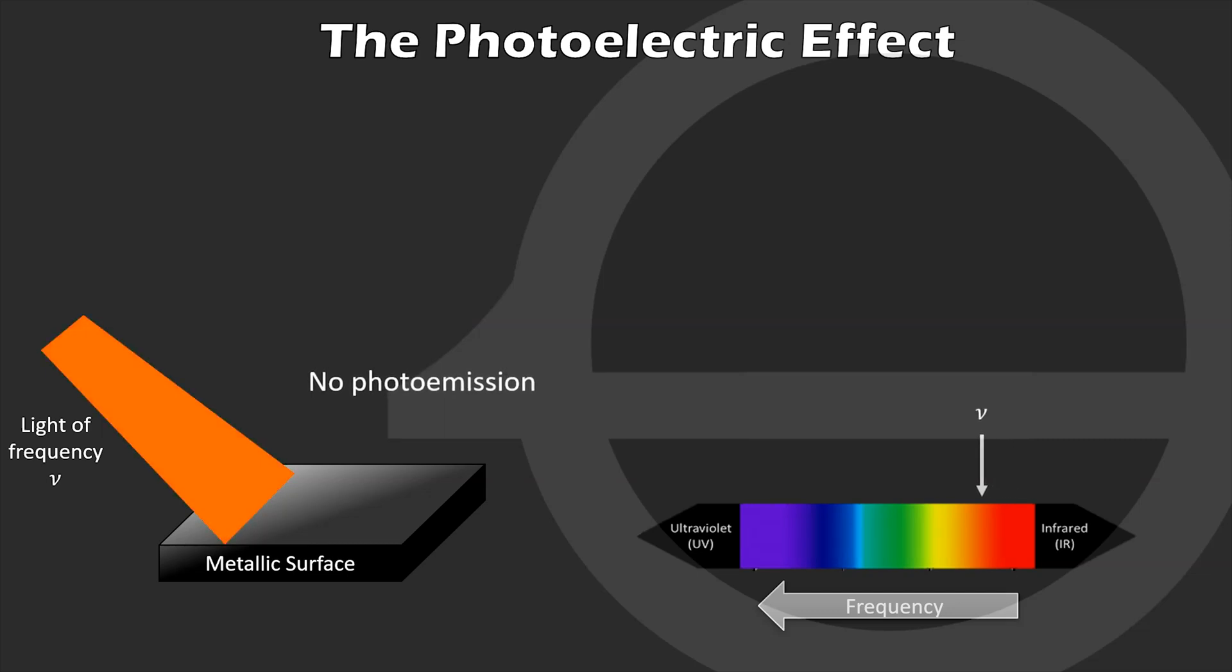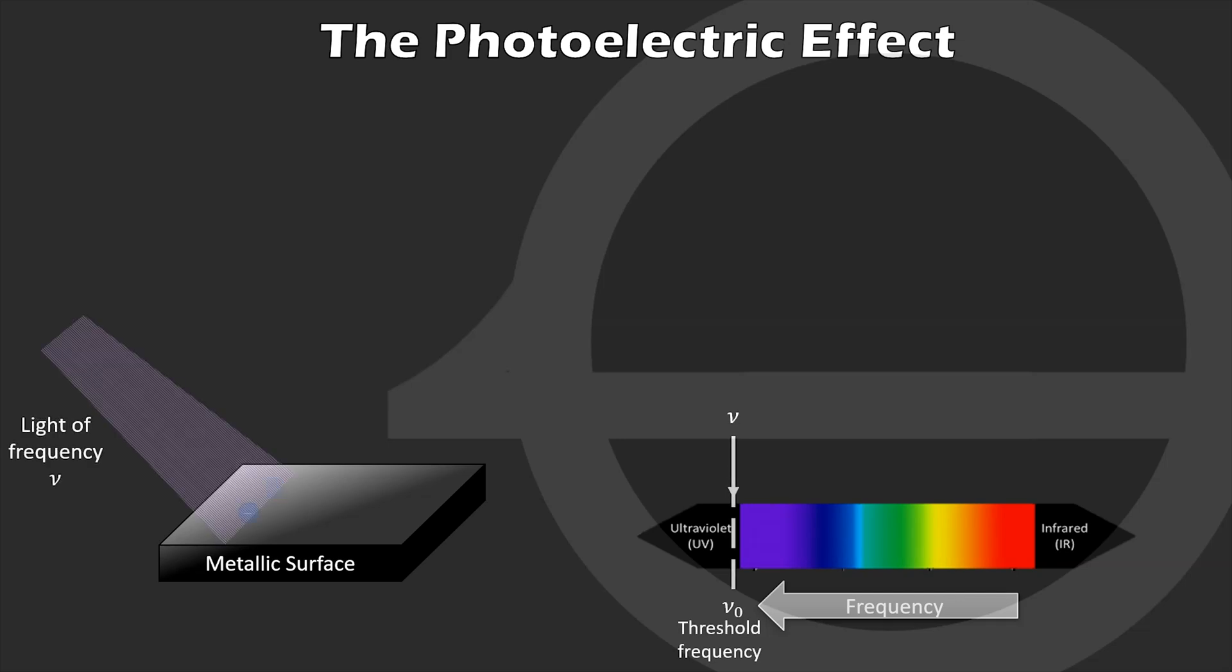Now we gradually increase the light frequency. We see that we don't detect any photoelectrons emitted, regardless of the light intensity, until we finally reach a frequency, let's call it nu-naught, where photoelectrons are finally detected, but they are emitted with zero kinetic energy.